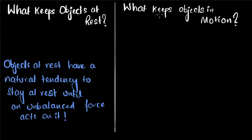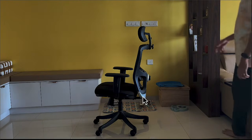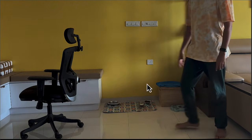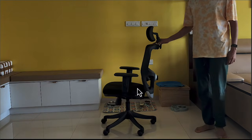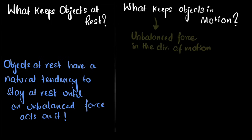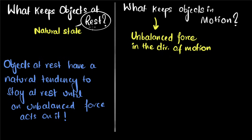Now let's get to the more interesting question — what keeps objects in motion? We might say: if we want this chair to move forward, we need an unbalanced force in the forward direction, and if we stop putting an unbalanced force, it comes back to rest. So it seems like an unbalanced force in the direction of motion is what keeps things moving. This sounds intuitive, but unfortunately, this is wrong.